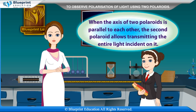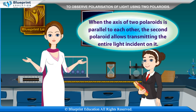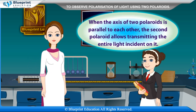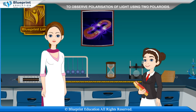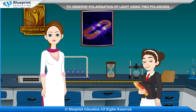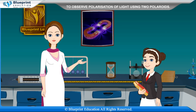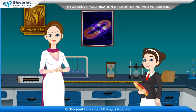When the axis of two polaroids is parallel to each other, the second polaroid allows transmitting the entire light incident on it. But when the planes are perpendicular to each other, no light is transmitted through the second polaroid. This shows that the incident light on the second polaroid is plane polarized.